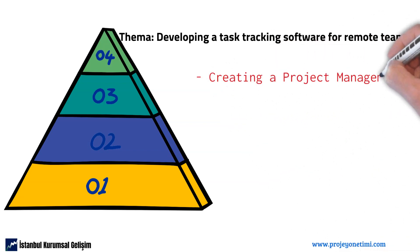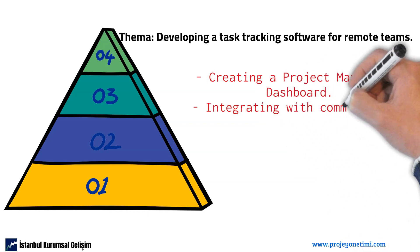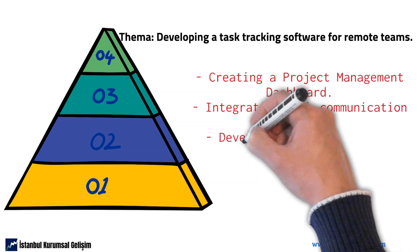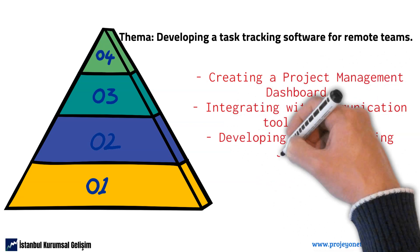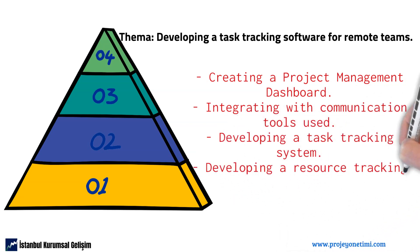Creating a project management dashboard. Integrating with communication tools used. Developing a task tracking system. Developing a resource tracking system. All of these elements need to be divided into multiple small stories to be delivered, but they are all related to the same theme. Epics can be delivered over several sprints and can be run by different teams.